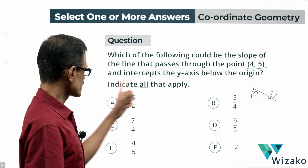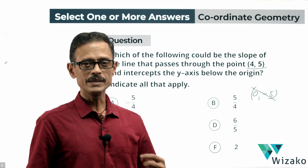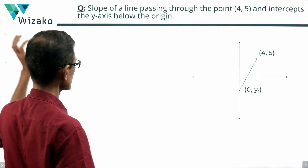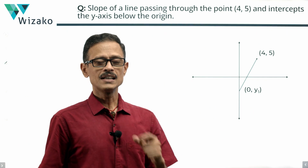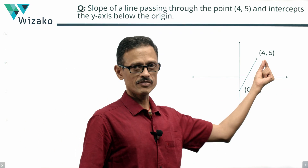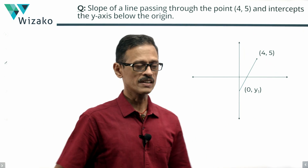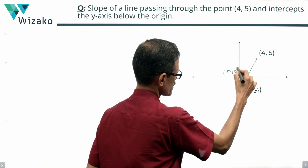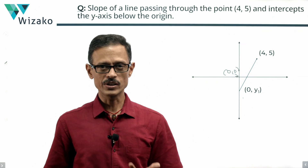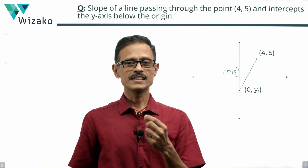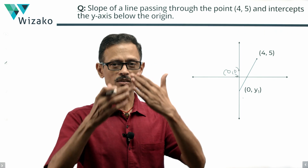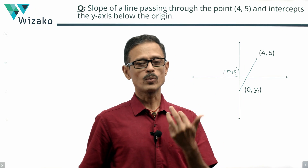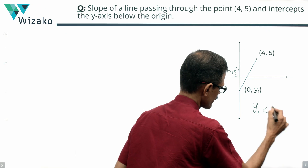Given that, among the answer options, which could possibly be the slope of that line? Let's draw this line to understand what is stated and find the answer. The line passes through a first quadrant point, since both x and y coordinates are positive, and it cuts the y-axis at a point below the origin. When a line cuts the y-axis, the x-coordinate of that point is 0. Let's say the y-coordinate where it cuts the y-axis is y1 — it's evident that y1 is a negative number.